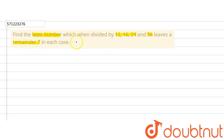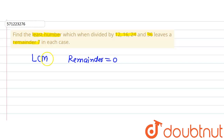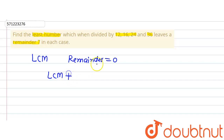We know that the least number — we can also call it the LCM. The LCM of these numbers will give us remainder 0, because LCM is nothing but the least common multiple, so it will be a multiple of all of these. But the question says the remainder should be 7, so our answer will be LCM plus 7. First we find the LCM, then add 7 to it.